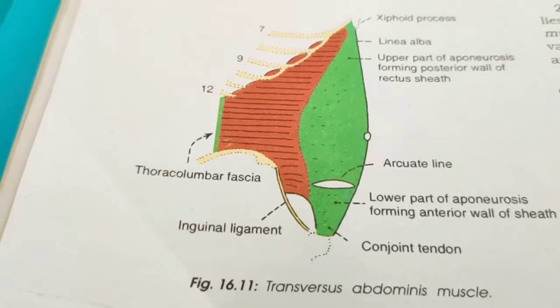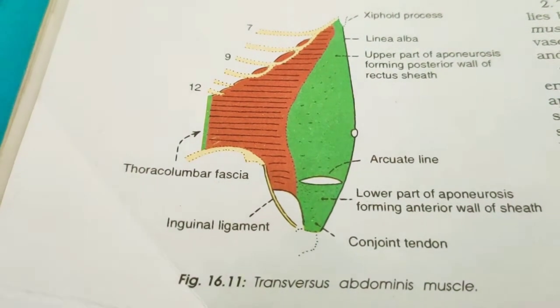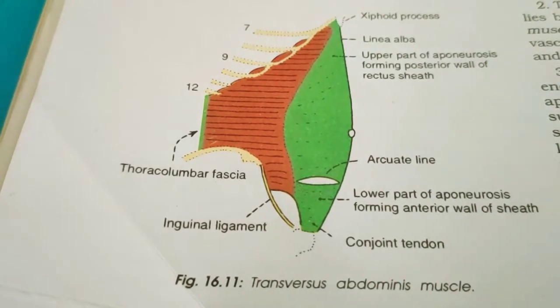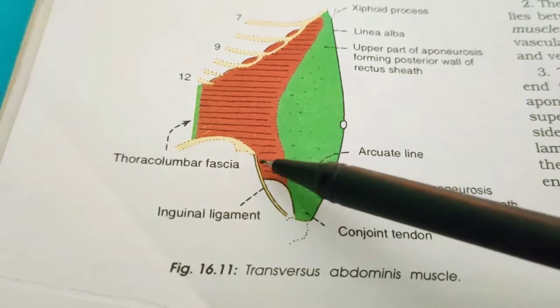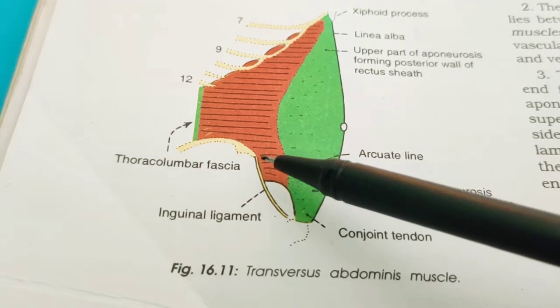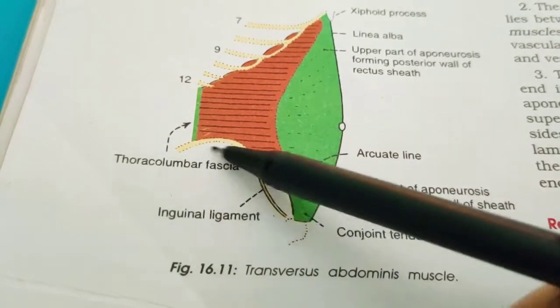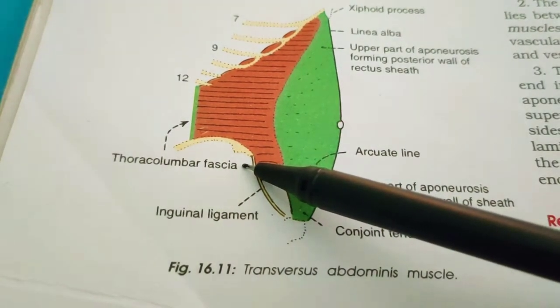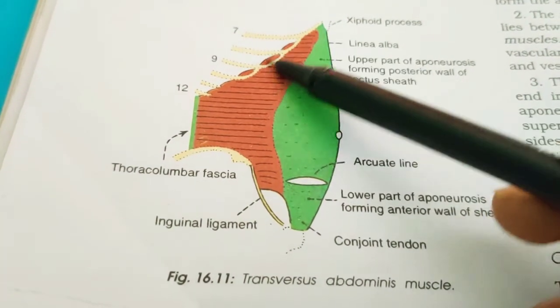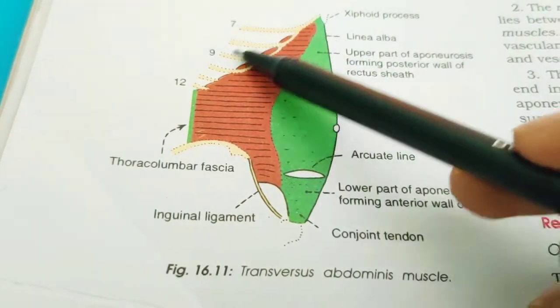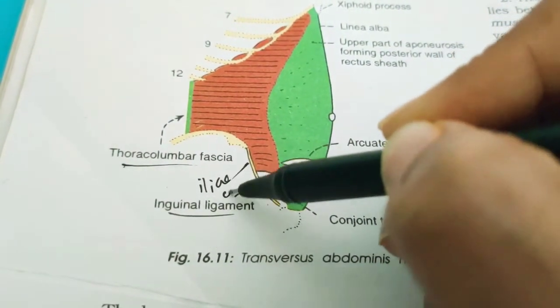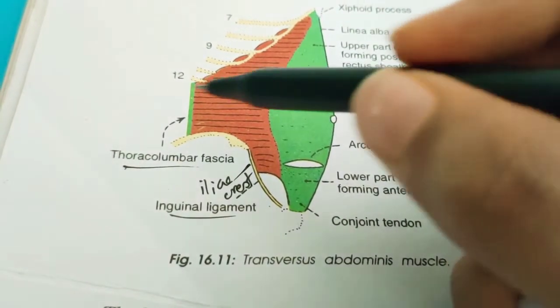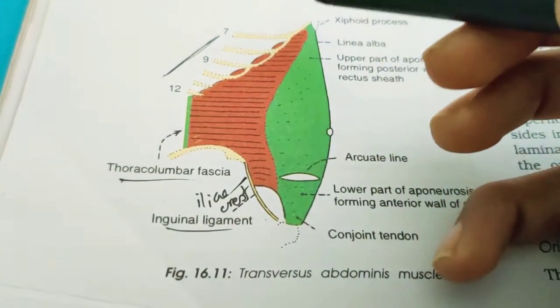Now it is time to discuss the third flat muscle: transversus abdominis. The transversus abdominis has a fleshy origin from the lateral one-third of the inguinal ligament, anterior two-thirds of the inner lip of the iliac crest, the thoracolumbar fascia — similar to internal oblique — and also from the inner surface of the lower six costal cartilages. The fibers are directed horizontally forwards.